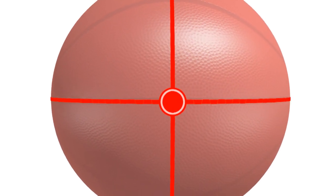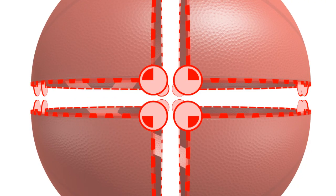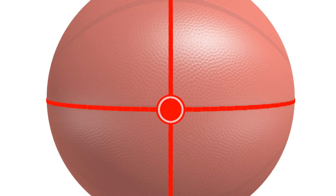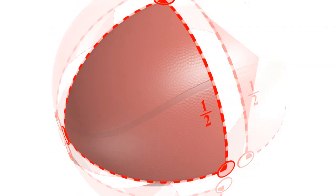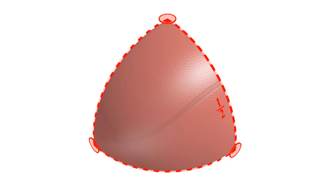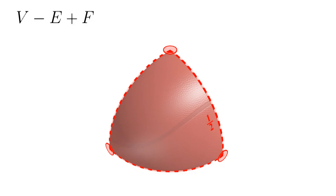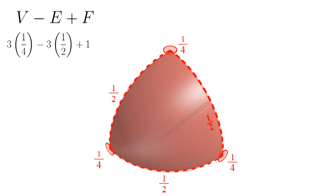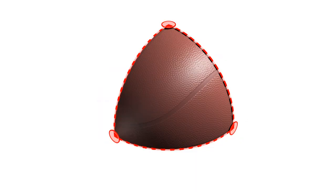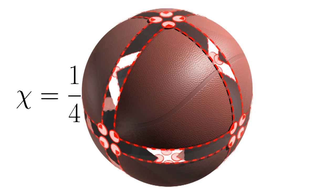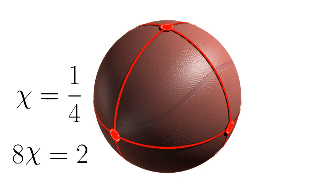Here is one vertex of the sphere — this vertex is made from four orbifolds, with each orbifold contributing one-fourth of the vertex. This is an edge of the sphere; this edge is made from two orbifolds, with each orbifold contributing half the edge. So the orbifold is made of half-edges and quarter-vertices. What's the Euler characteristic of the orbifold? This orbifold has three quarter-vertices, three half-edges, and one face, so V minus E plus F is one-quarter. If we copy this orbifold eight times, the characteristic becomes eight times one-quarter, which equals two — the characteristic of a sphere.